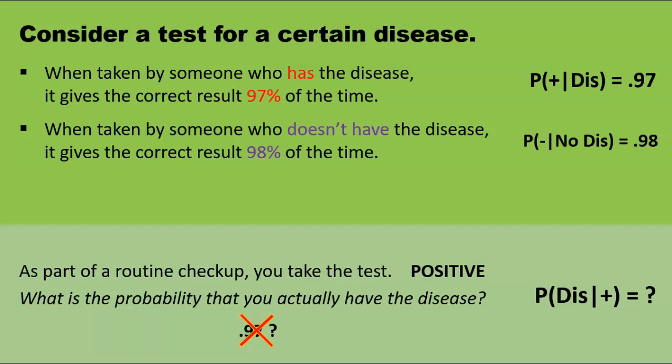Okay, we've practiced translating statements into the notation of conditional probability, but the question remains. We've tested positive. How likely is it that we actually have the disease? And here I'll make a confession. I haven't given you enough information to answer that question. One more piece of information will suffice, though. We need to know how common the disease is in the general population.